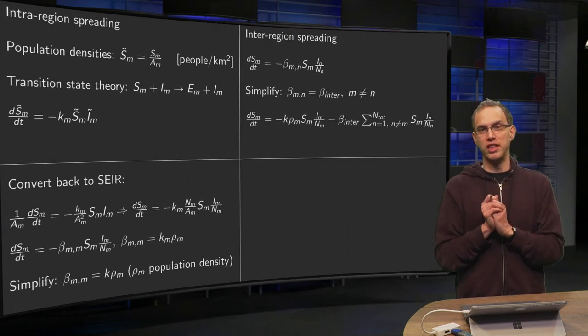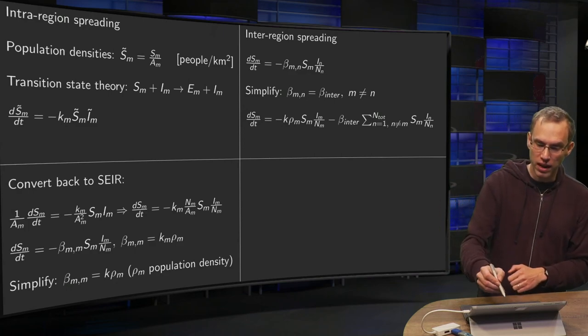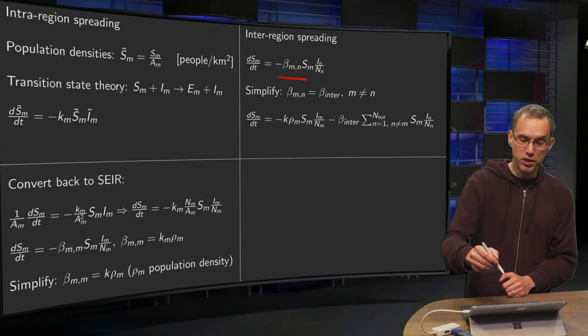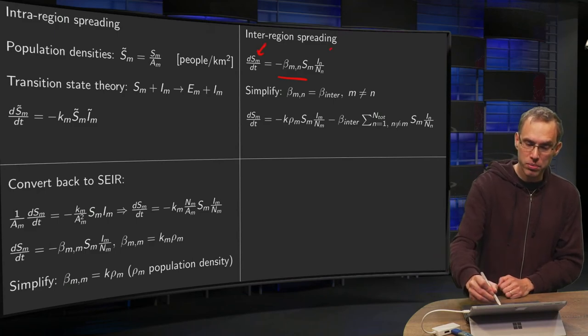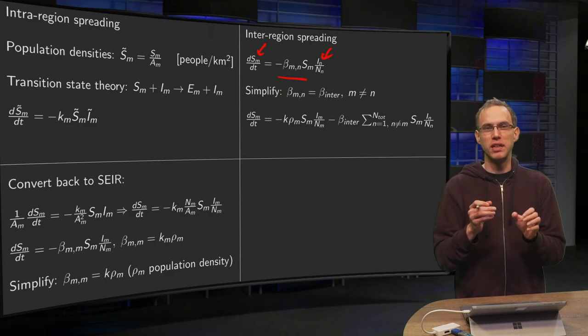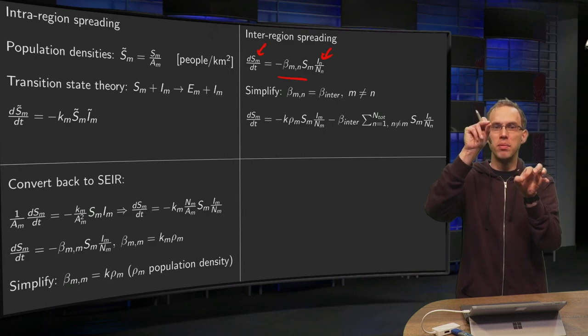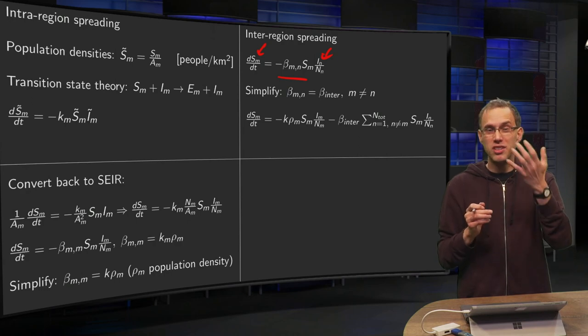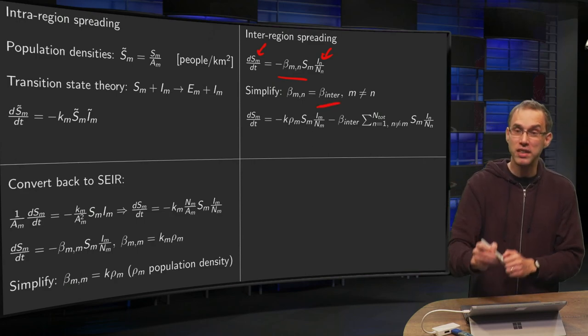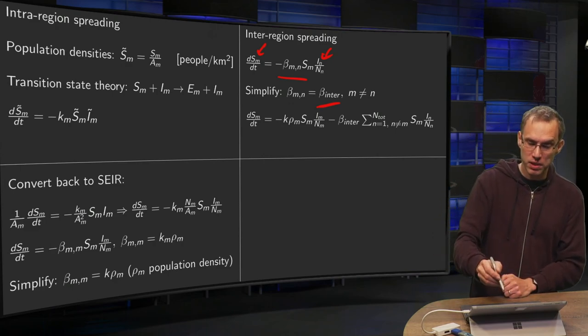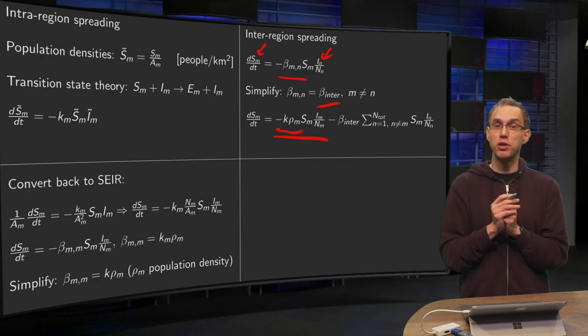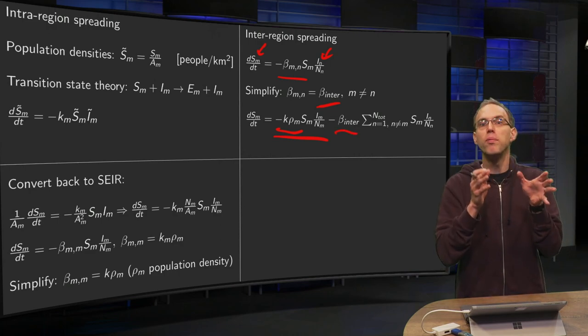Then inter-region spreading. For that we just take an SEIR model with a beta M comma N, which tells us the chance that someone which is susceptible in region M meets someone in region N. This beta should depend on something? Well it's basically due to someone traveling in one region towards another region, but if you're traveling from one region to another, going on a family visit or whatever, then this type of behavior doesn't care about population densities. So in this case it might be a very good idea as a first approximation to set this beta inter-region just to a constant. Then for dSM/dt, an intra-region spreading, which will be probably the largest contribution, with this coefficient k times rho m, and an inter-region spreading with some beta inter, which will probably be a small coefficient.